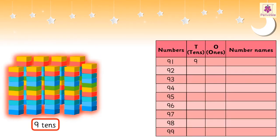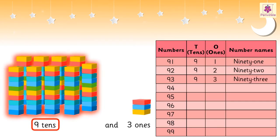9 tens and one one is 91. 9 tens and two ones is 92. 9 tens and three ones is 93.